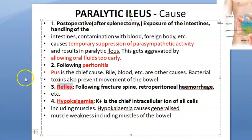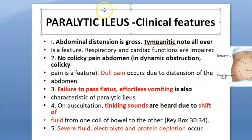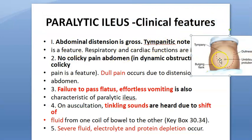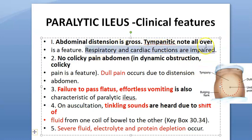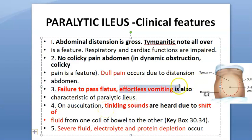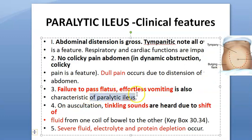The clinical features include gross abdominal distension with a tympanic note all over. Respiratory and cardiac functions could be impaired. There is no colicky pain — instead patients have dull pain. They will not pass flatus, and they can have effortless vomiting, which is a characteristic feature of paralytic ileus.